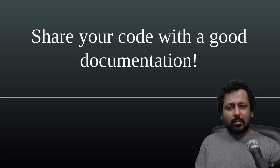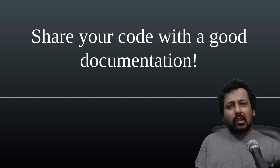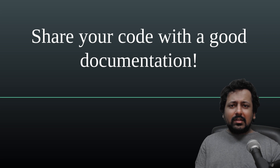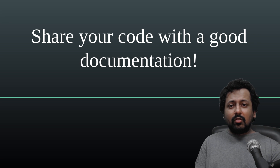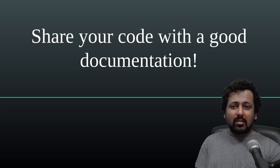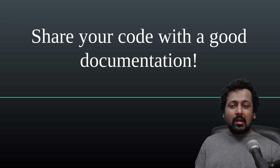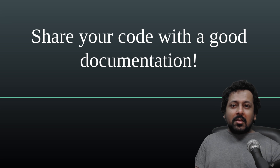Another thing to consider when creating your GitHub repository is a license. If you want your code to be used by others, think about the license — most of the time people won't use your code if it doesn't have a license. You have different options like Apache, MIT, BSD, and GPL licenses. The appropriate license depends on what libraries you've used in your project, so take some time to figure out what suits it. Adding a license enables others to use it directly without needing to contact you.